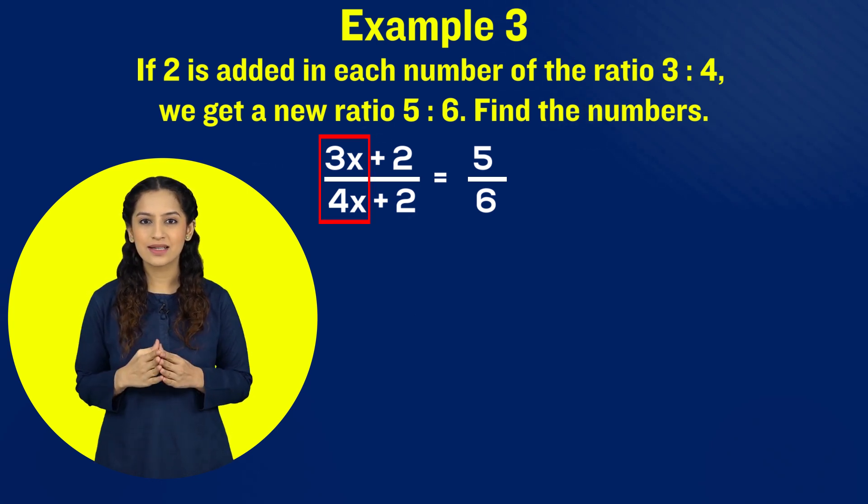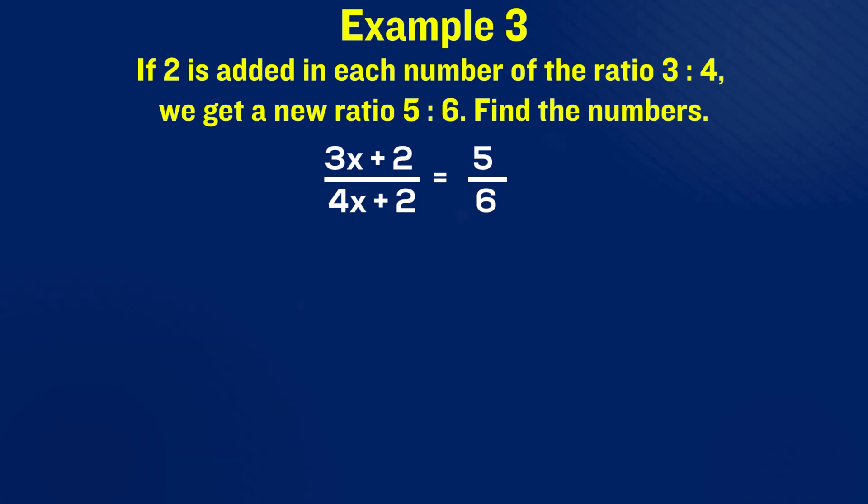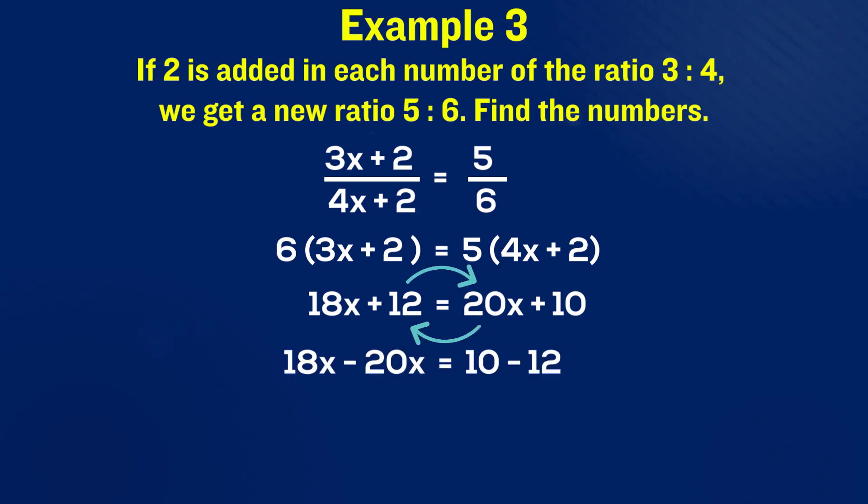Let's begin by cross multiplying: 5 and 6 to get 6 into (3x+2), and on the right side 5 times (4x+2). Open the parentheses and multiply, then simplify by shifting the like terms on one side to isolate the unknown x.